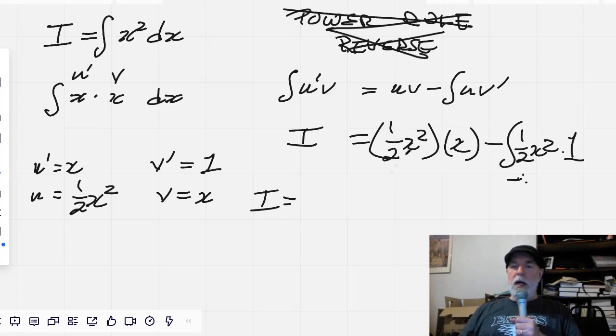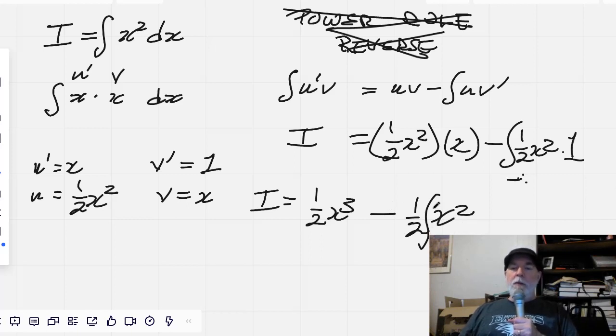I equals one half of x cubed minus that one, we can disappear. And we're going to bring this one half out. So we've got one half x squared, the integral thereof. And I'm skipping out the dx's. A little bit of a license here. Okay, now, so what is this integral of x squared? Oh, that's just I. So I equals one half x cubed minus one half of I.